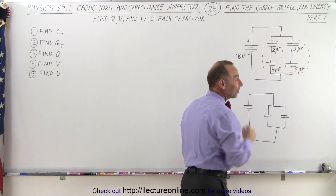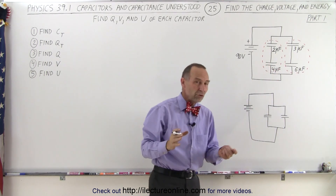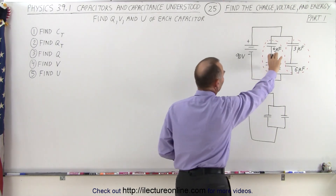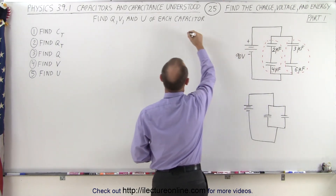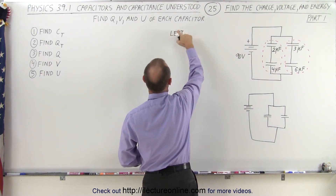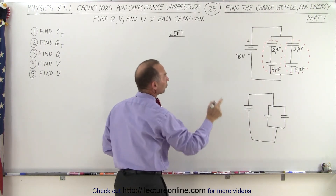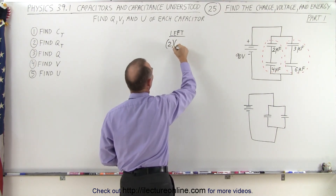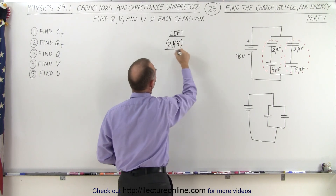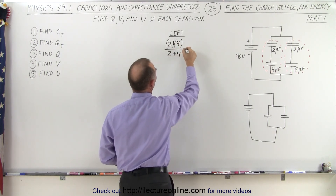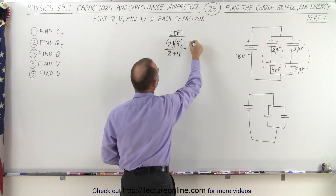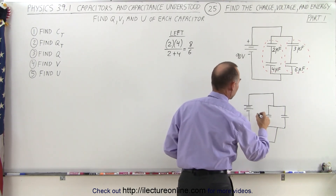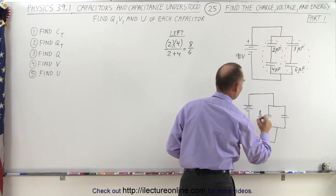Since these are in series, we have to use the one-over rule, or the product-over-the-sum rule. For the left side, we're going to use the product over the sum: that's 2 times 4 divided by 2 plus 4, so that's equal to 8 over 6. That would be the equivalent capacitance on the left side — 8 over 6.